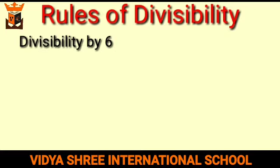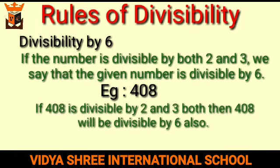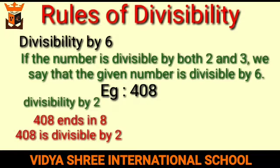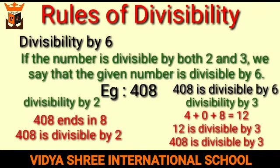Next is divisibility by 6. If the number is divisible by both 2 and 3, we say that the given number is divisible by 6. For example, 408 — since 408 ends in 8, it is divisible by 2. When we add up all the digits, 4 + 0 + 8, we get 12, and we know 12 is divisible by 3. So 408 is divisible by 3, and therefore also divisible by 6.